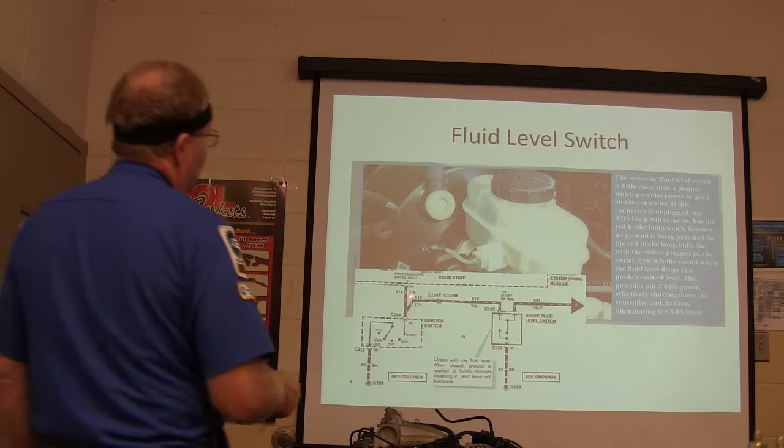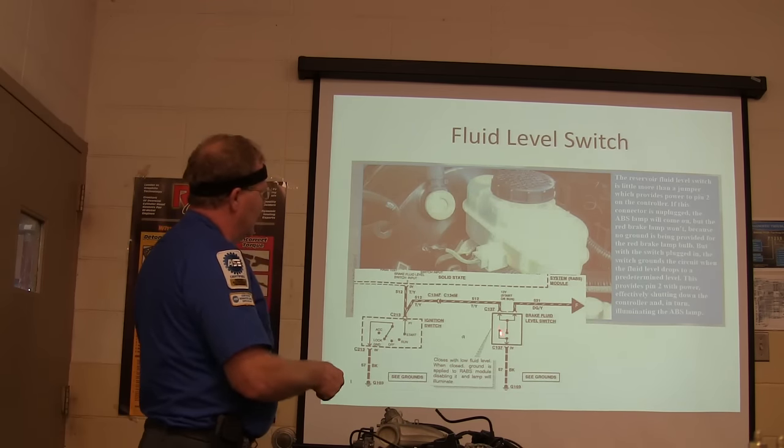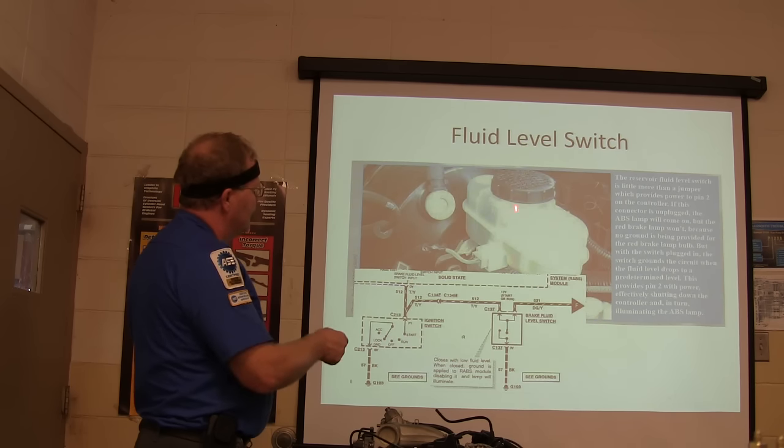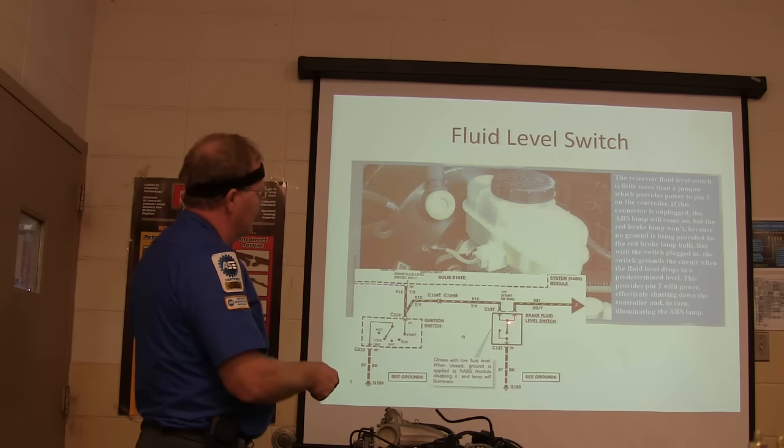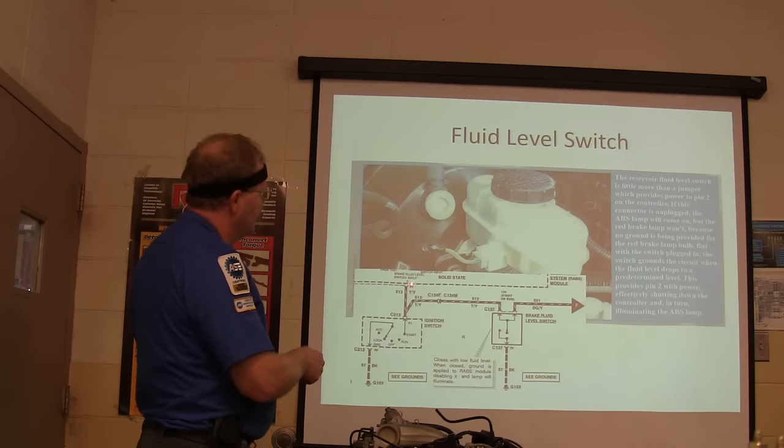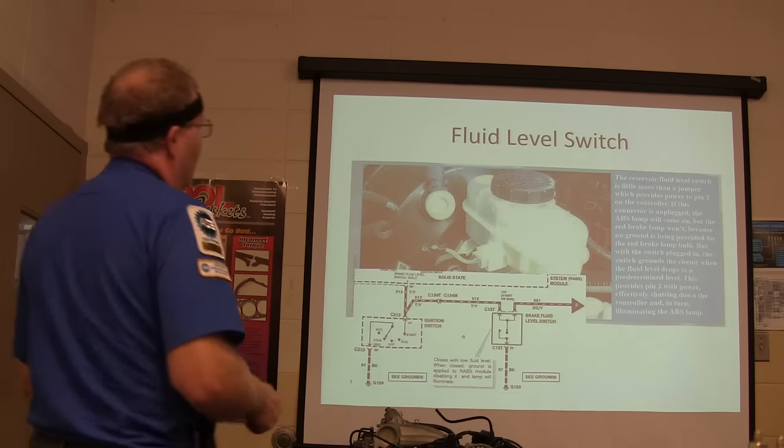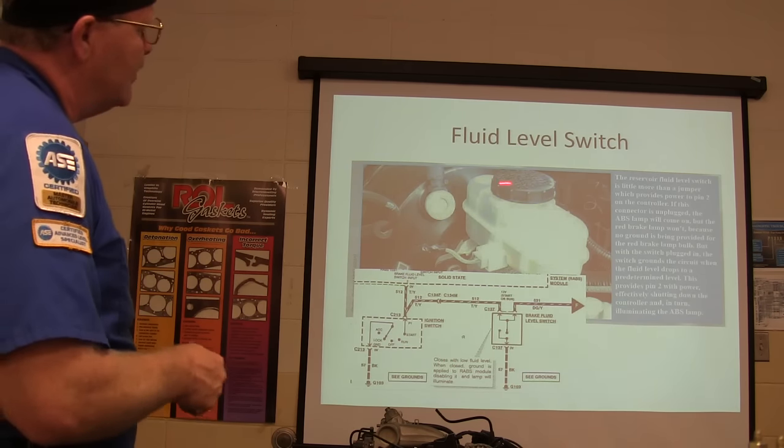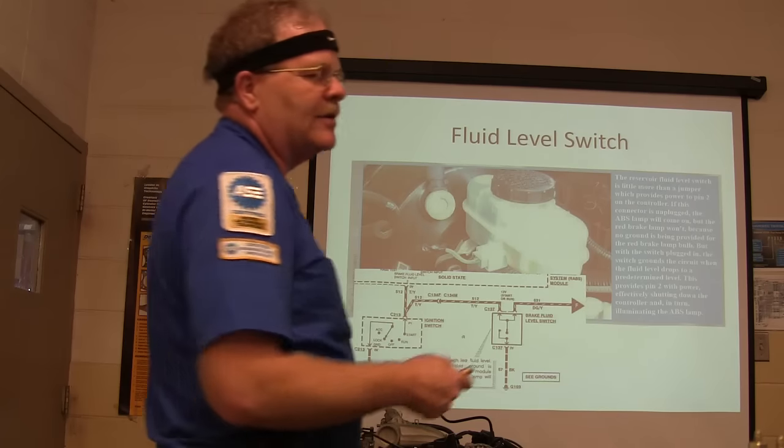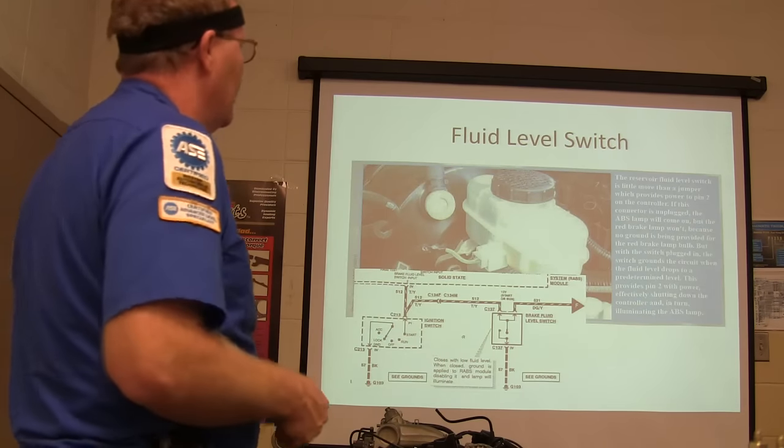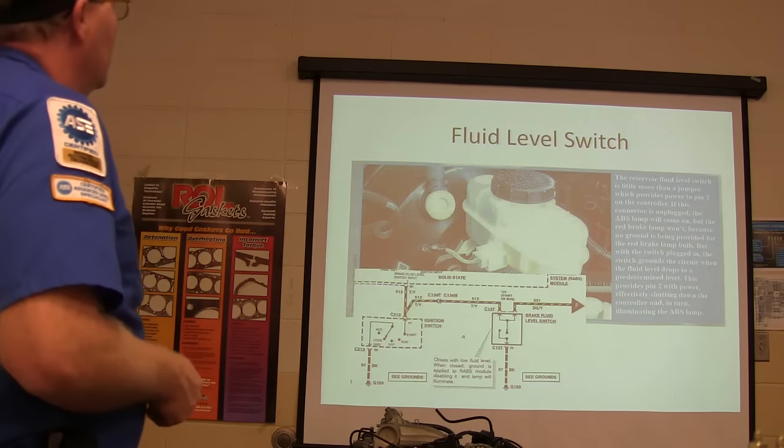You see those two wires? You've got a tan yellow, you've got a dark green yellow, and there's a ground right here. Now when this thing gets a little low on fluid in here, it grounds both of those. And not only does it turn on that red brake light, but it also kills the power going to pin 2. You see there? Now that's really important to understand on this system. It closes when below fluid level. And this reservoir was what the guy replaced because he figured this was what the problem was because usually that's what it was. He wasn't playing on his phone either. He was actually paying attention.